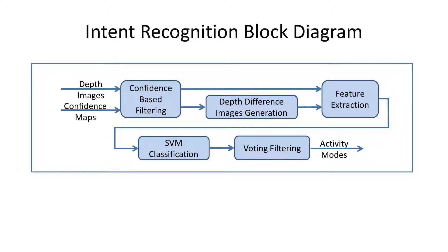Our intent recognition system works as follows. The input of the system is the depth and confidence frames, which come from the depth camera DS325. We start by filtering the depth image using confidence measures in order to remove noise in the data. Then we generate two depth difference images in order to incorporate motion information.